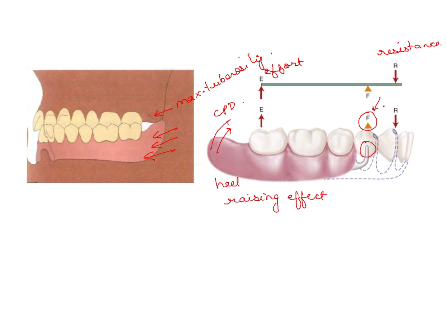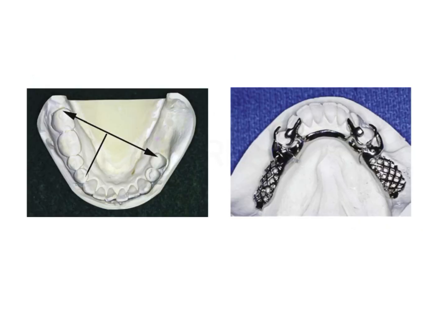So this tipping axis, or the tipping motion, or the heel raising effect, needs to be removed. This is particularly in distal extension, or Kennedy's Class 1 and 2 cases. So how do you get rid of this kind of movement?